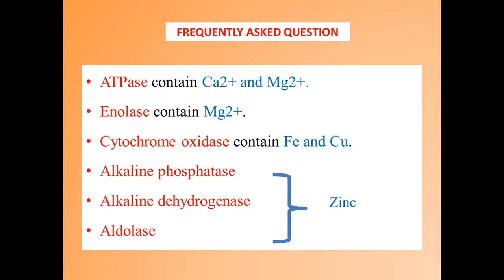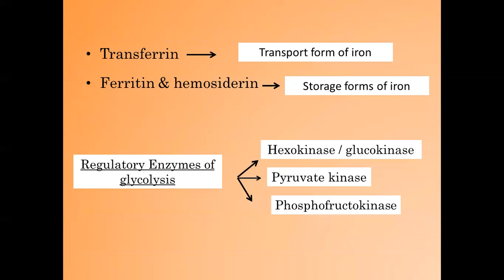Now these are again some frequently asked questions. ATPase contains calcium and magnesium. Enolase contains magnesium. Cytochrome oxidase contains iron and copper. And alkaline phosphatase, alcohol dehydrogenase, and aldolase contain zinc. Transferrin is the transport form of iron, and ferritin and hemosiderin are the storage forms of iron.